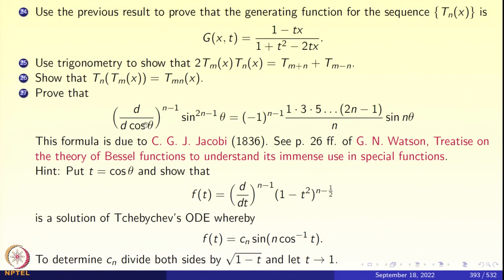The next exercise is a very amusing problem in elementary calculus. If you take cos θ as an independent variable, the (d/d cosθ) applied n−1 times to sin^(2n−1)(θ) has a nice closed expression: (−1)^n · 1·3·5···(2n−1) / n · sin(nθ). This formula goes back to Jacobi in 1836, and you can look at Watson's monumental treatise on the theory of Bessel functions to understand its immense use in the theory of special functions.